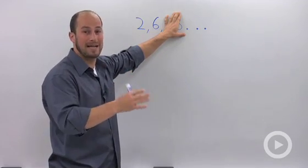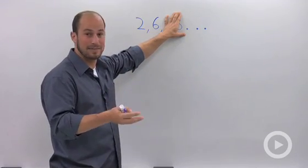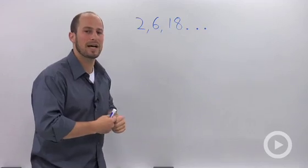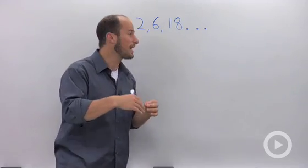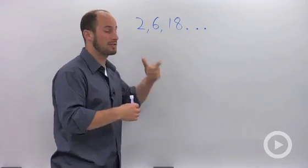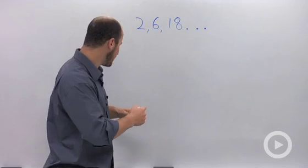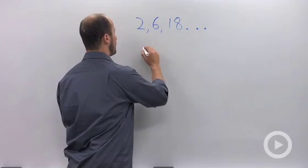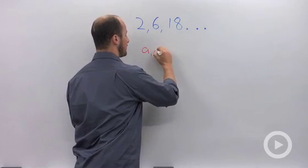What we're gonna do now is find the general term, find the a sub n, for a geometric sequence. We are given the first term, a₁ equals the first term.